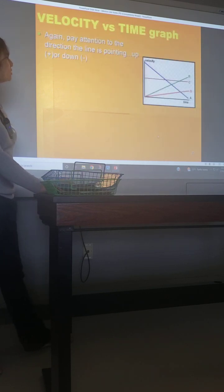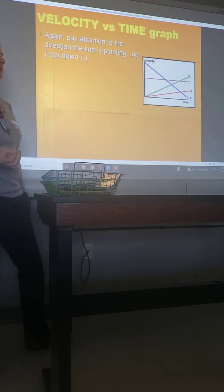The main thing that you're paying attention to is: is the line straight or is it curved, and is the line pointing up or is it pointing down? Straight versus curved shows it's constant or changing. Up or down shows positive or negative slope, meaning positive or negative acceleration.